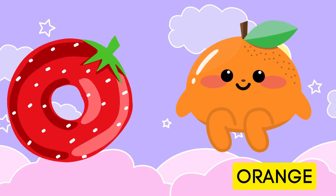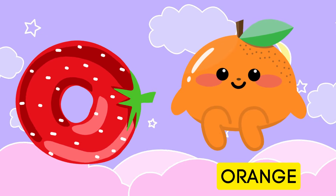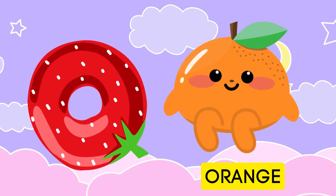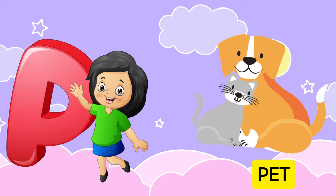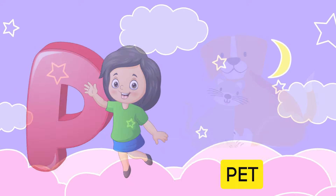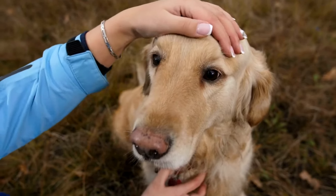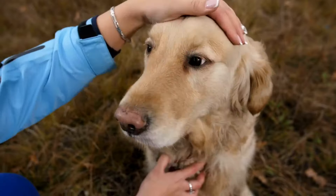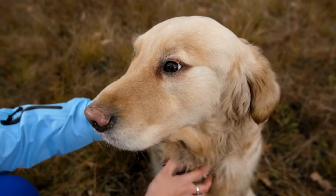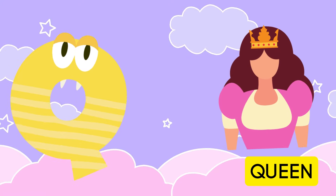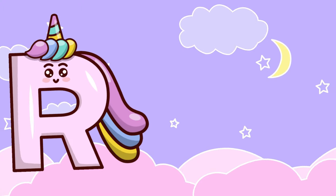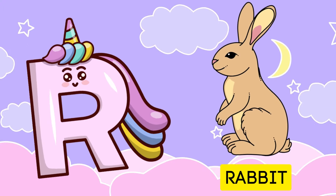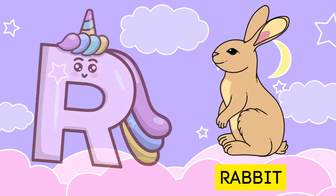O is for orange, o-o-orange. P is for pet, p-p-pet. Q is for queen, qu-qu-queen. R is for rabbit, r-r-rabbit.